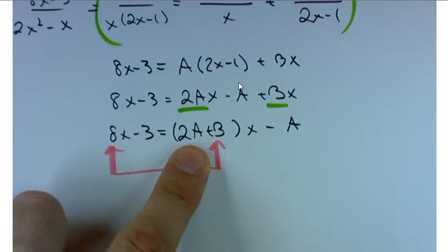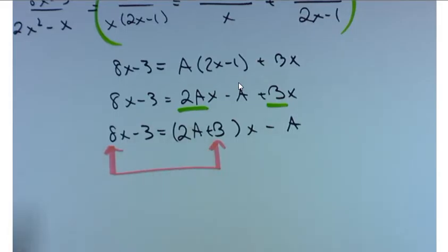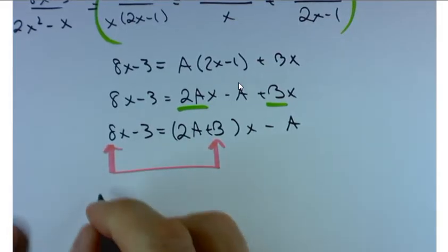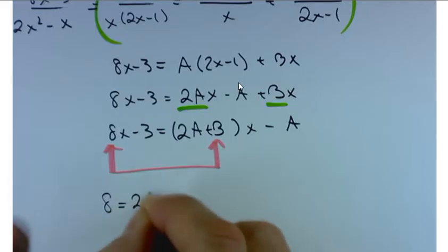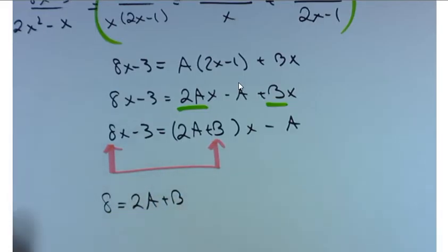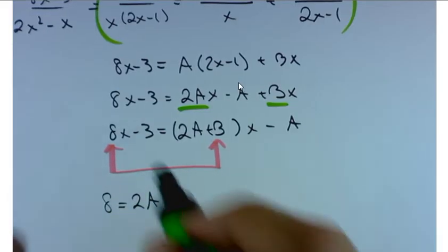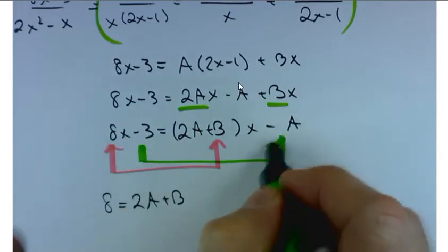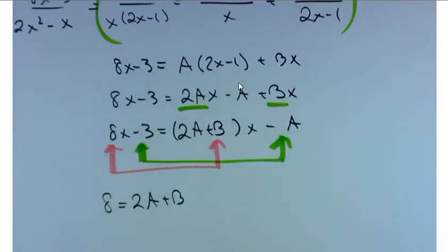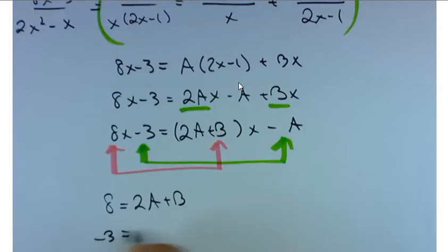So the equation you get is: 8 equals... There you go. 8 equals 2A plus B. Equals 2A plus B. Jeff, how about the next equation? Negative 3 equals negative A. Nice. Negative 3 equals negative A.